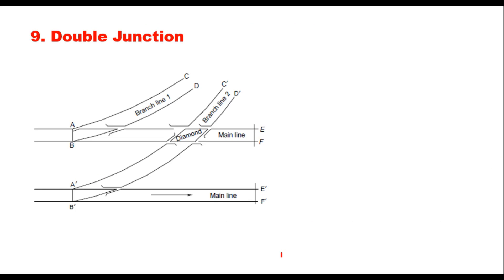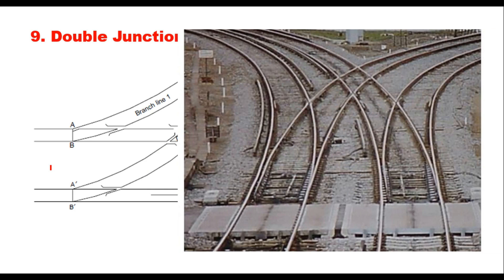Next comes the double junction. A double junction is when there are two parallel tracks and from both of these tracks, turnouts take off in the same direction. This creates a diamond crossing, and the entire arrangement is called the double junction. The two tracks can be straight or on a curve, and the turnouts are taken from the same point on both tracks.